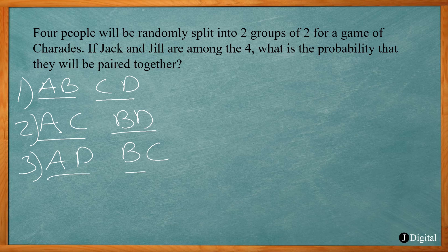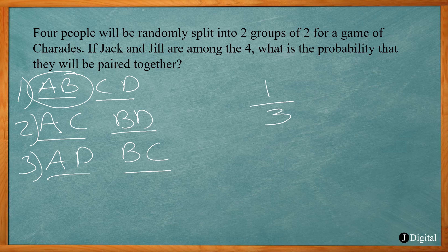If Jack and Jill are A and B, only one of these three groupings has them paired together. So the probability that they are paired together is one over three.